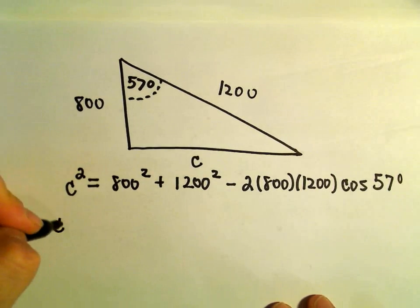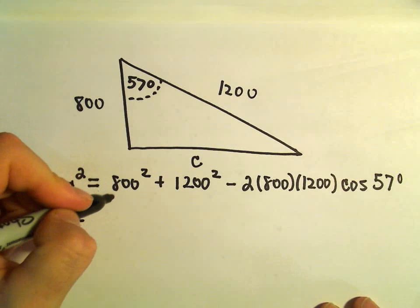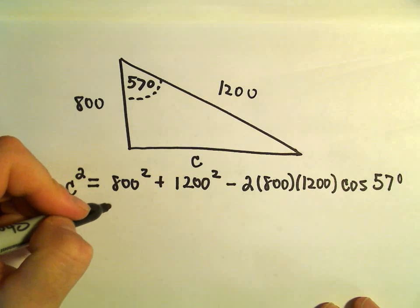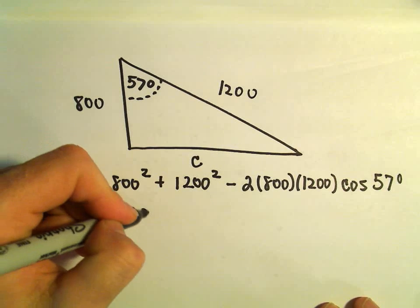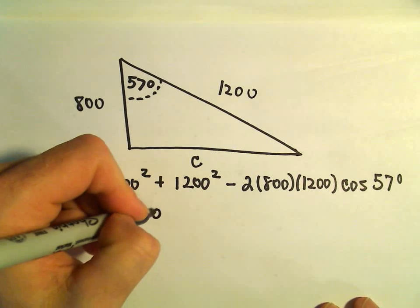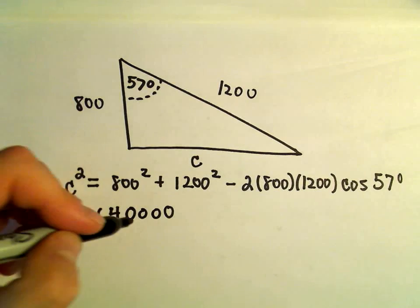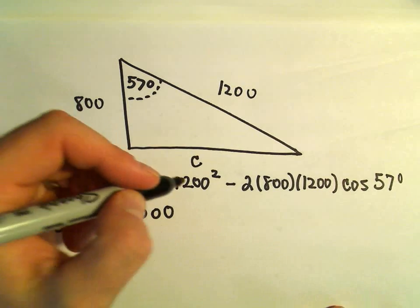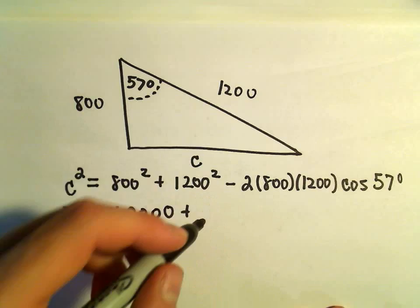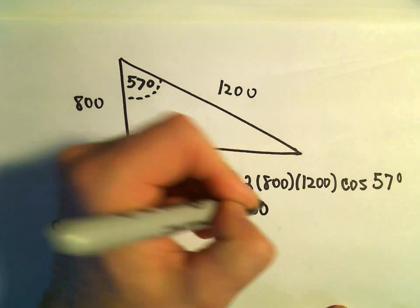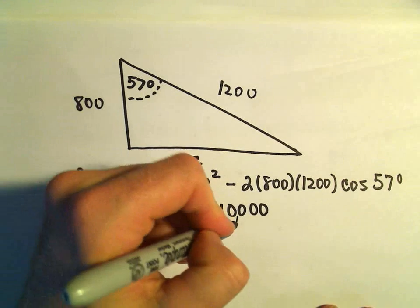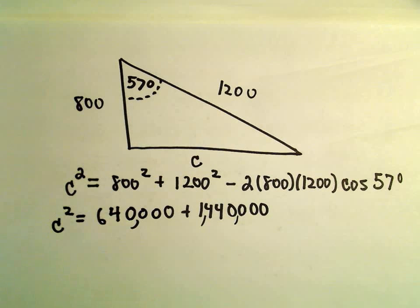Now it's just a lot of arithmetic. 800 squared, that would be 64 with four zeros. 1,200 squared, that would be 144, but then we would need four zeros as well. So some big numbers, but that's okay.